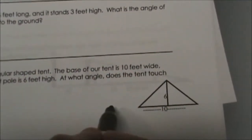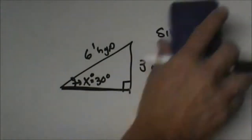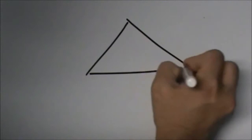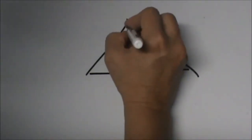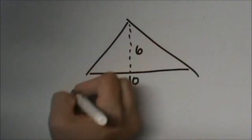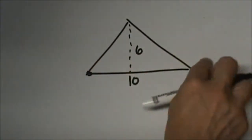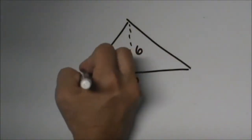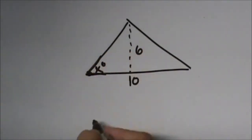So let's draw this and try to figure out what exactly we are looking for here. So here is our tent. This measurement is 10, the pole is 6, and we are looking for the angle that the tent makes with the ground. So here is our tent and here is the ground. So that is our angle.